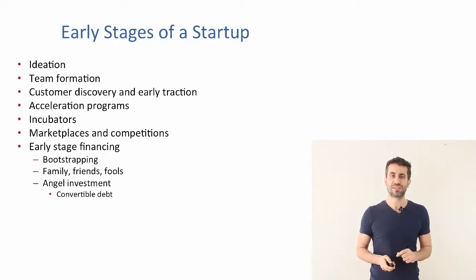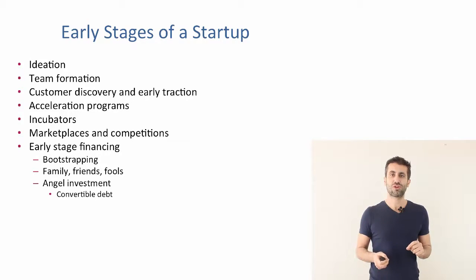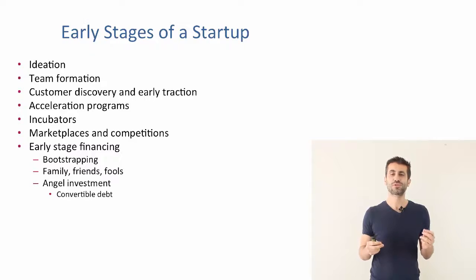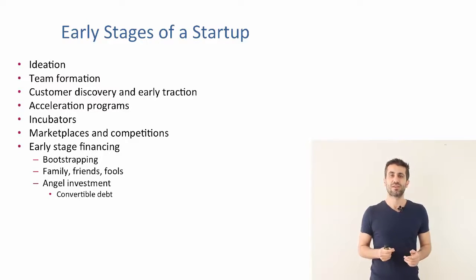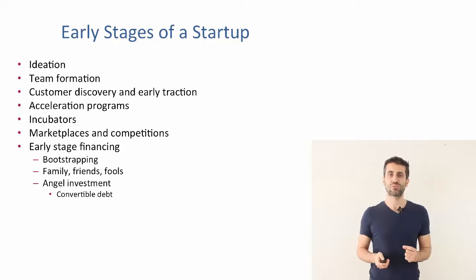Another financing option is angel investment, which is actually the earliest form of systematic investment. Angel investments are typically in the range of $20,000 to maybe a million dollars. In financial terms, angel investors make their investment as convertible debt, which means it is technically a loan to the company. The company might pay back the loan, but in reality the angel investor hopes to get an equity stake in the company at a later stage when the company is valued more. If the company fails, it doesn't owe money to the angel investor, but if it becomes successful, the angel investor has an option to convert this debt into equity.